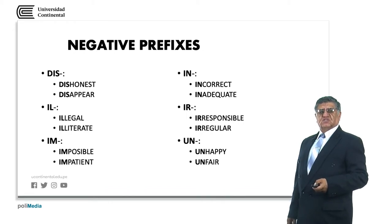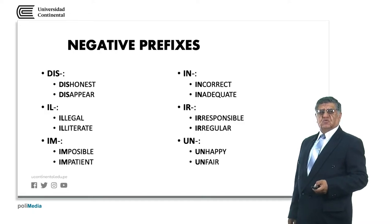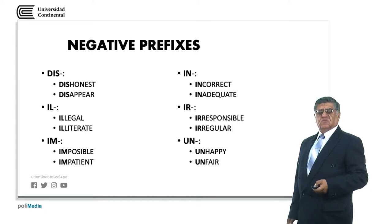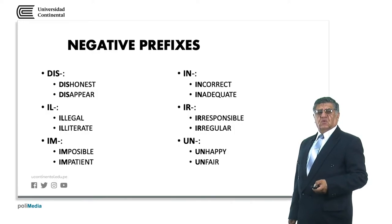Dishonest, for example, is a person that has no honesty. Disappear is completely opposite to appear. Illegal is the opposite to legal. Illiterate refers to some people that didn't have enough studies or didn't study at all. Impossible means it's not possible. Impatient means that one has no patience. Incorrect means not correct. Inadequate means not adequate, and so on.